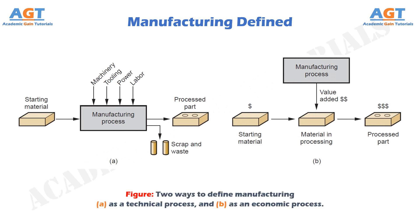Technologically, manufacturing is the application of physical and chemical processes to alter the geometry, properties, and appearance of a given starting material to make parts or products. Manufacturing also includes assembly of multiple parts to make products. The processes to accomplish manufacturing involve a combination of machinery, tools, power, and labor, as depicted in figure A. Manufacturing is almost always carried out as a sequence of operations, each bringing the material closer to the desired final state.